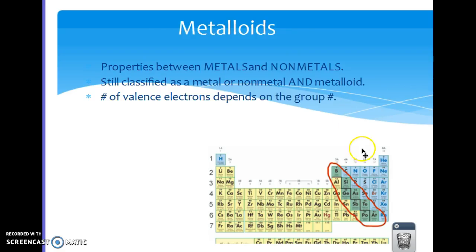Our next group are your metalloids, and remember start that zigzag line above aluminum and then go all the way down. Aluminum is not included in a metalloid category. It is definitely a metal. So all of these, other than aluminum here, are called metalloids.